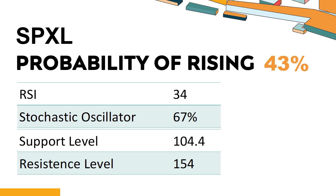What are the key technical drivers for SPXL? SPXL's 14-Day Relative Strength Index (RSI) value was 34.1. When the RSI is above 25 and below 50, it generally indicates that the stock is moderately bearish. This means the security's price has been falling but has not yet reached oversold levels, typically considered an RSI reading of 25 or lower. The current stochastic oscillator of SPXL is 67%.